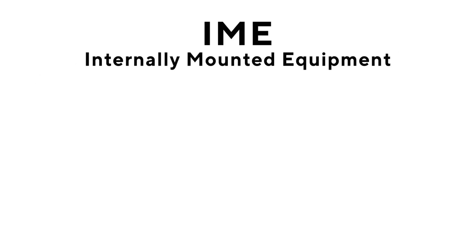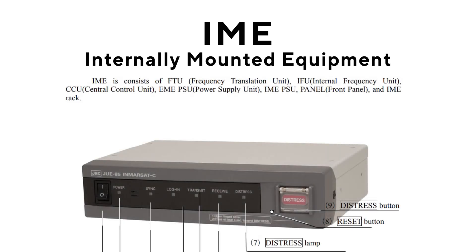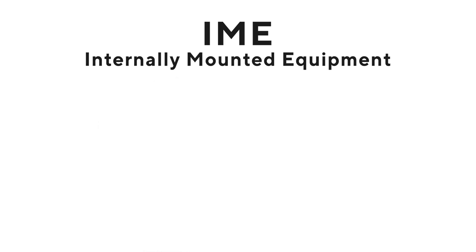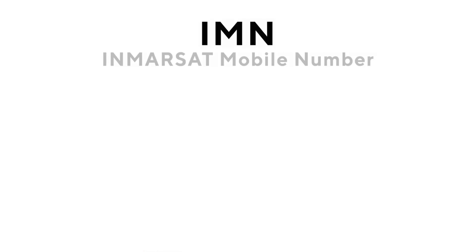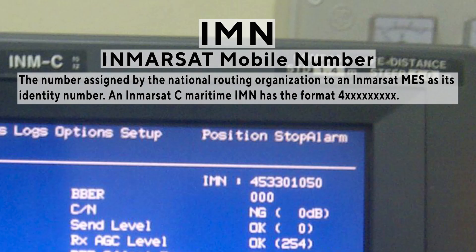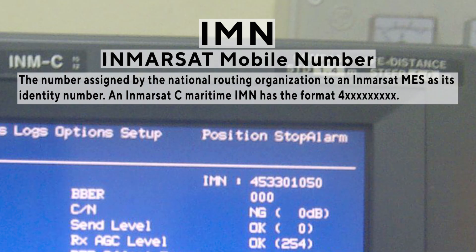IME: Internally Mounted Equipment. InMarsat Mobile Number — the number assigned by the National Routing Organization to an InMarsat MES as its identity number. An InMarsat-C Maritime IME has the format of 9 digits with 4 as the initial digit.